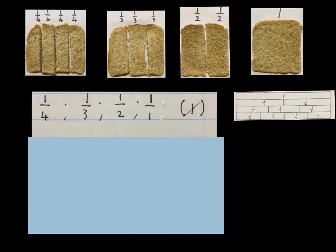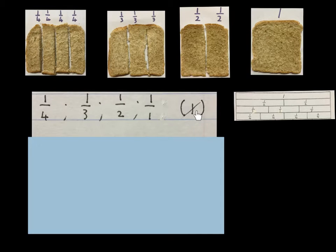Now let's compare one of each of these fractions, written from small to big. One quarter is the smallest. Then a third is bigger. A half is bigger than a third. And then one whole — you can write it as one or as a fraction — is the biggest. Even on the fraction wall you can see: a quarter is the smallest, then a third, then a half, then one. But I like to do it with the bread.